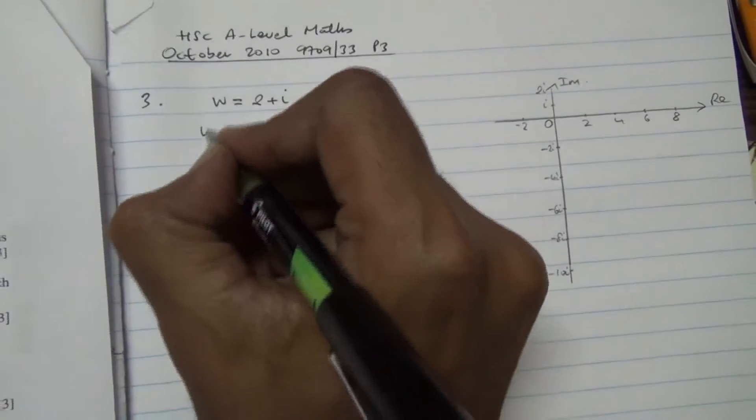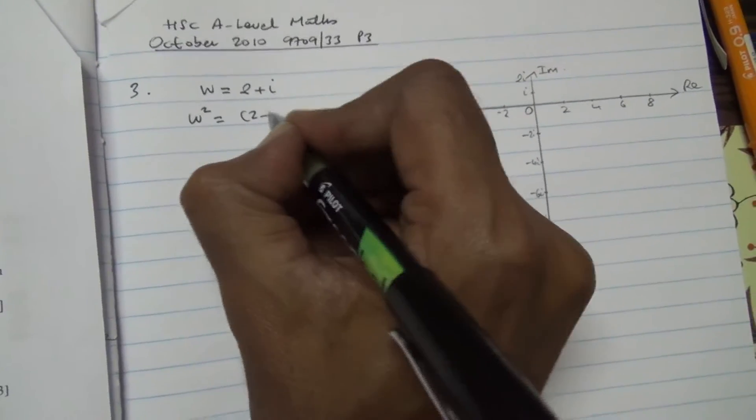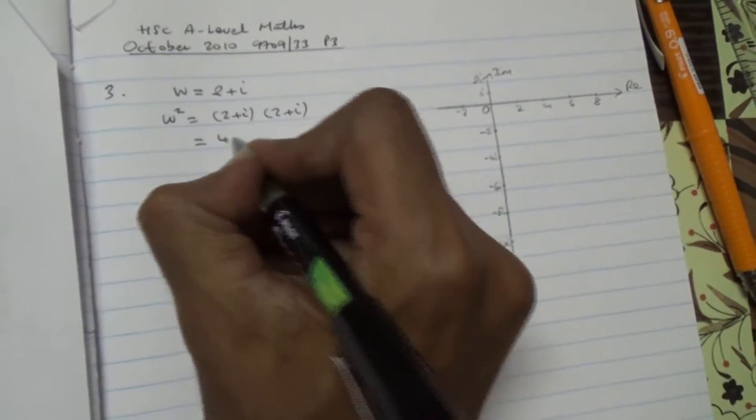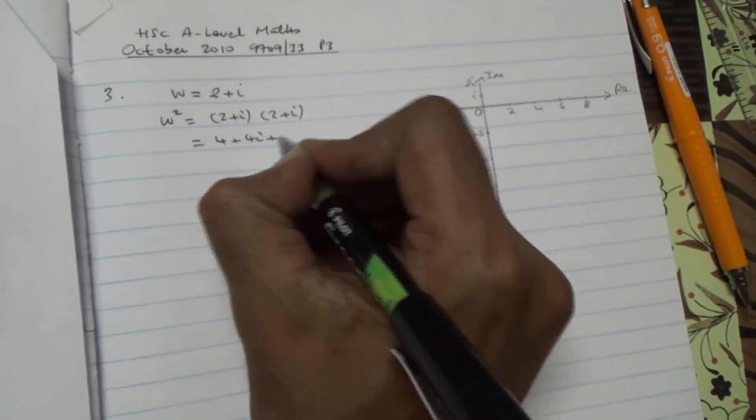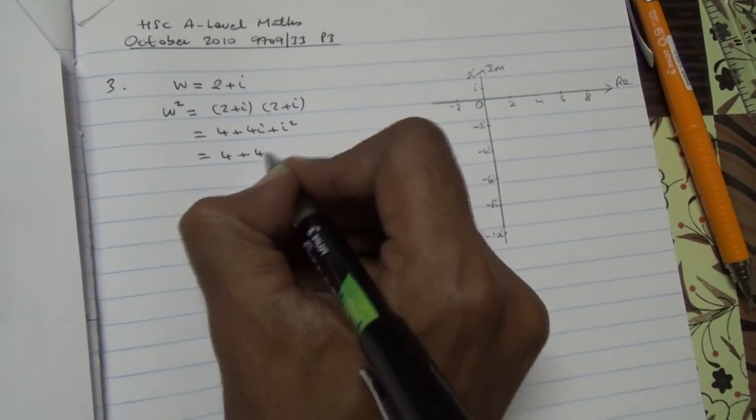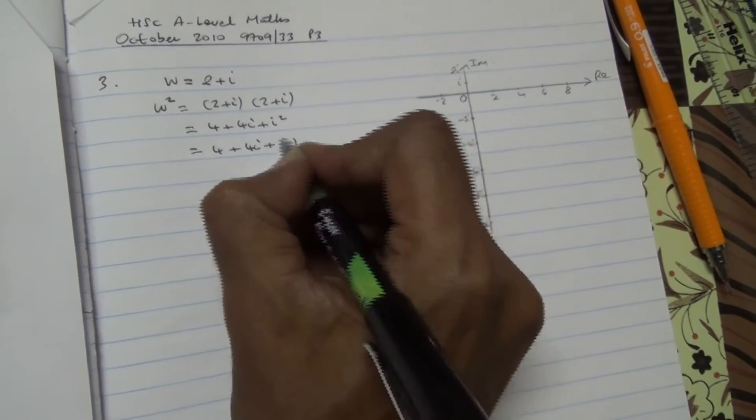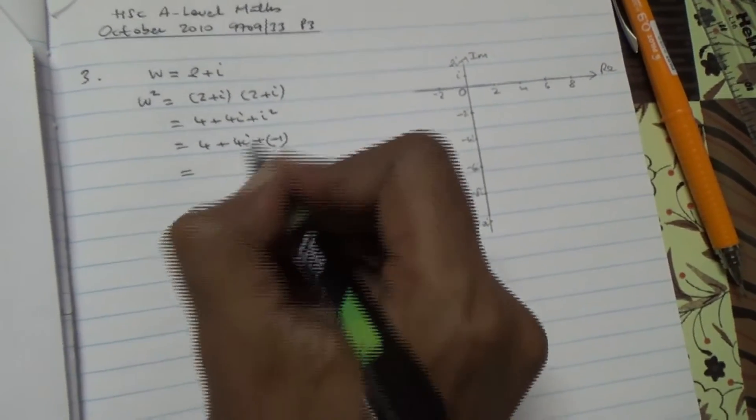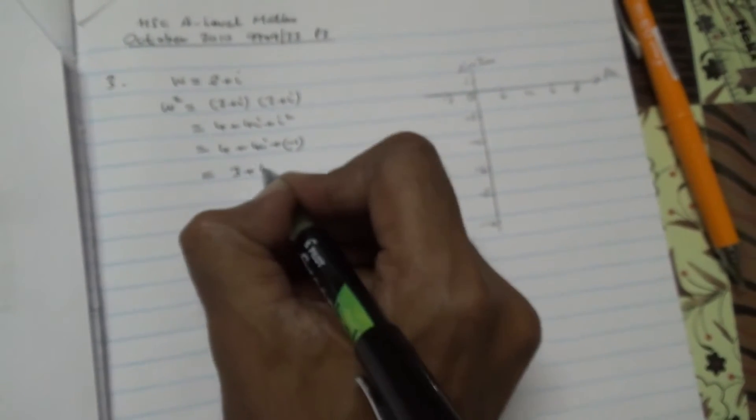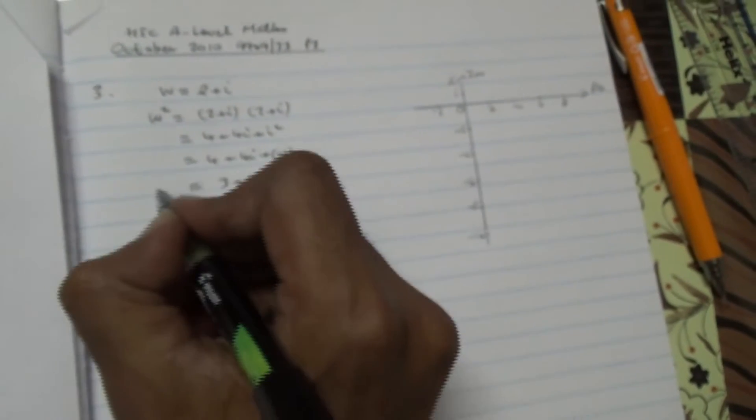So for the first part, we need to express w square. That's going to be 2 plus i times 2 plus i, and that's going to give us 4 plus 4i plus i square. Basic quadratic expansion. So we'll have 4 plus 4i plus minus 1, because i square is minus 1. 4 minus 1 is 3. We have 3 plus 4i. So that's the first part.